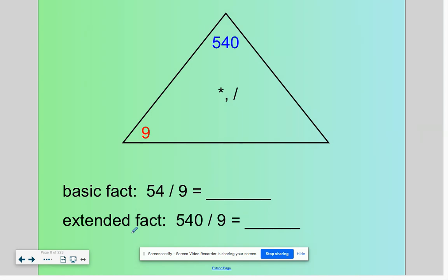So 54 divided by nine is six. That means 540 divided by nine is 60. That is our missing number in our fact triangle here.